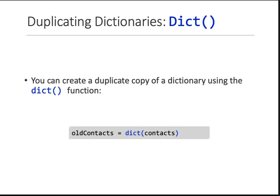If you want to duplicate or copy a dictionary, you use the dict() command. So given the first dictionary, you say dict() with the first dictionary passed in, and put it in another variable. So you just created a copy of the dictionary.